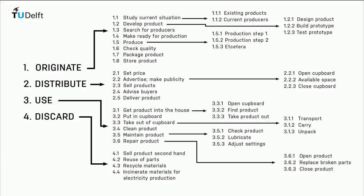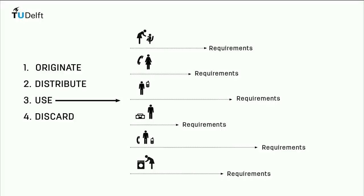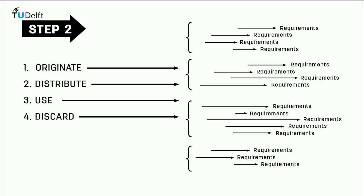Some products will have multiple users, so in the use phase you may have to introduce these as users 1, 2, 3, etc. Each user has specific requirements regarding the product. In step 2 you define and find as many requirements as possible, using the structure and numbering of your process tree.